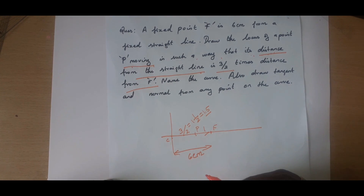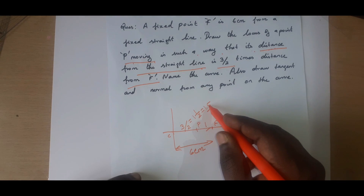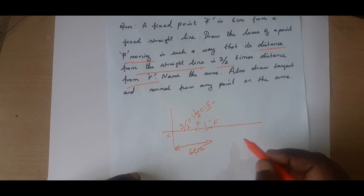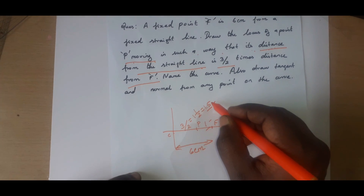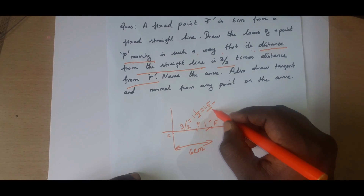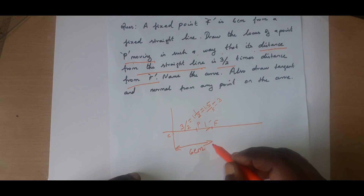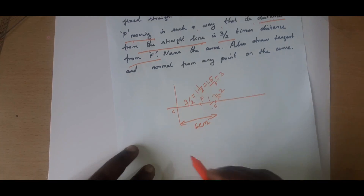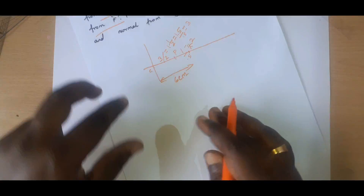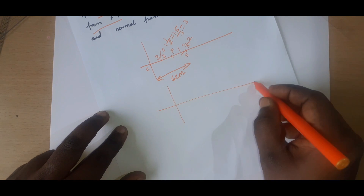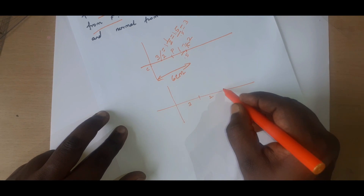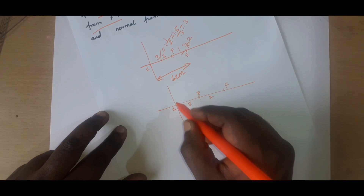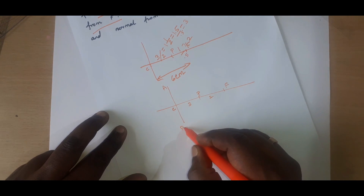So the total value is 1 and 1.5, and both are divisible by 0.5. Dividing 1.5 by 0.5 gives 3, and dividing 1 by 0.5 gives 2. So this is 3 times and this is 2 times — this is F, this is P, and this is C.